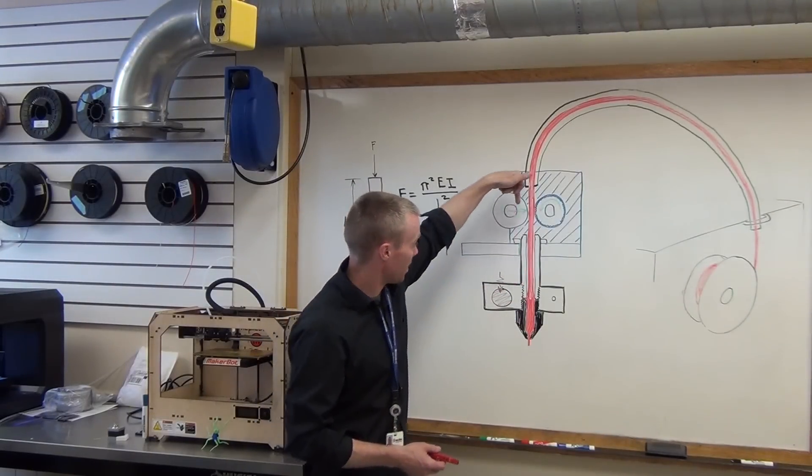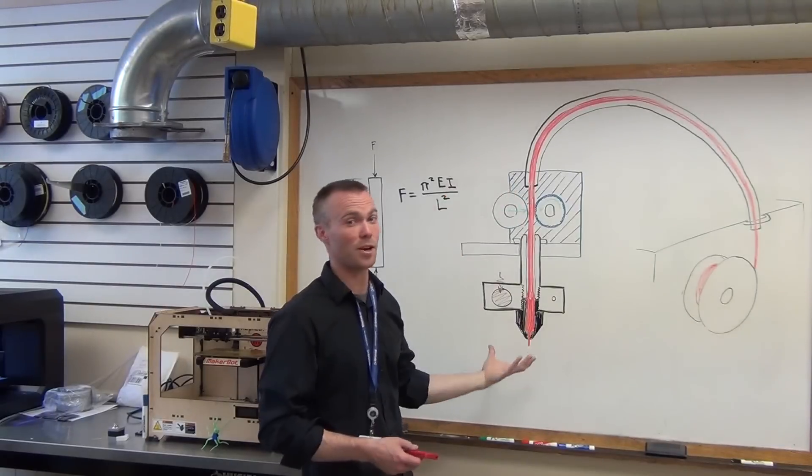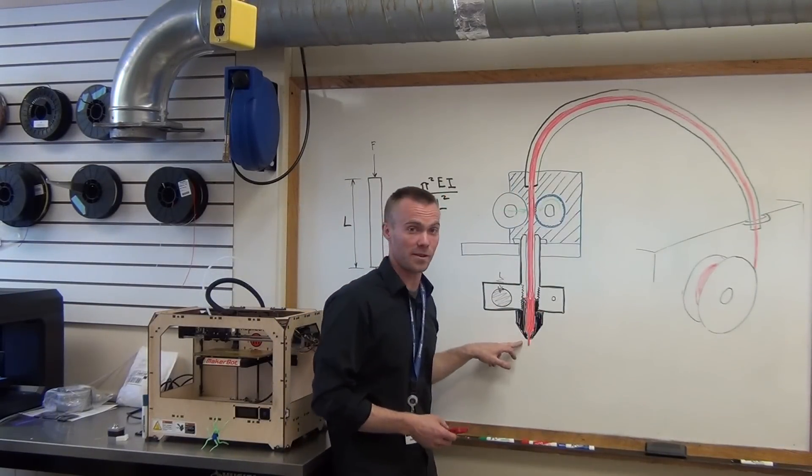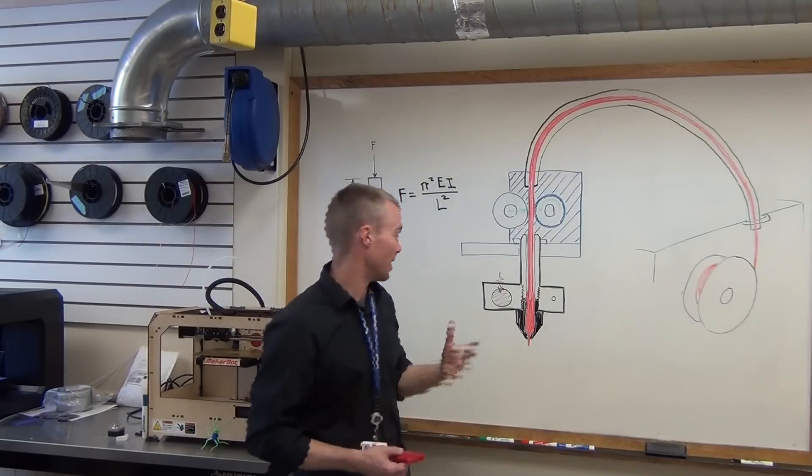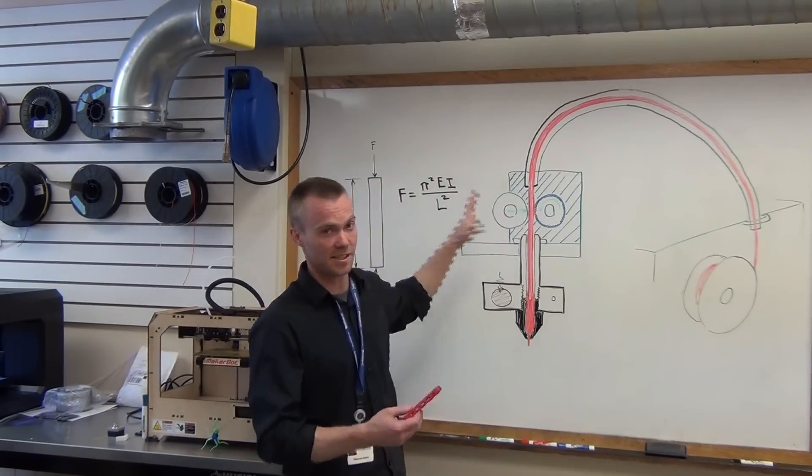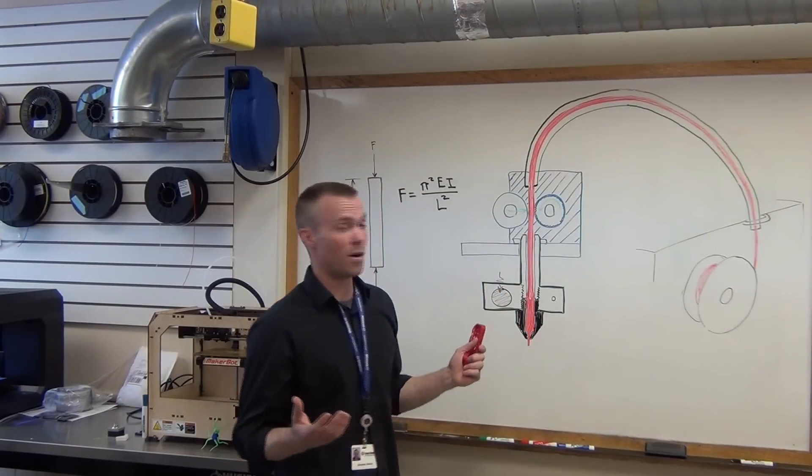The force that the extruder motor is putting on the filament is generating pressure inside that liquid region and forcing the liquid material out onto the substrate. That's where you're generating your print. Of course, you have your three-dimensional positioning system and all your other components to go along with it.